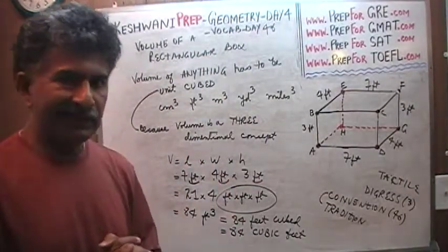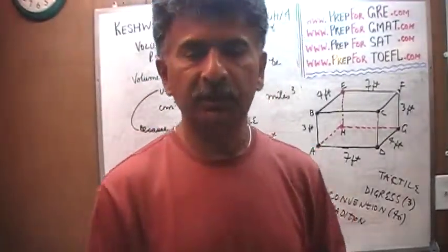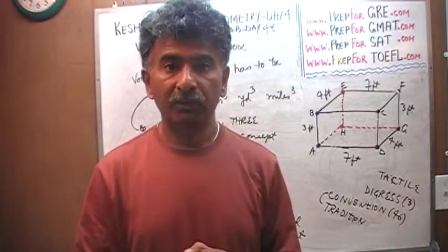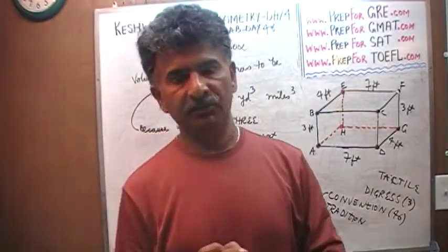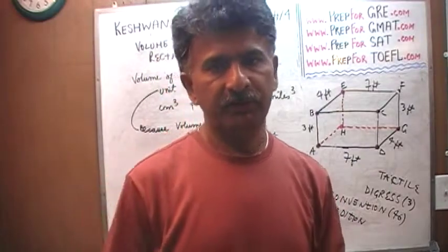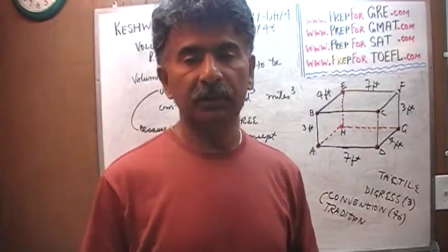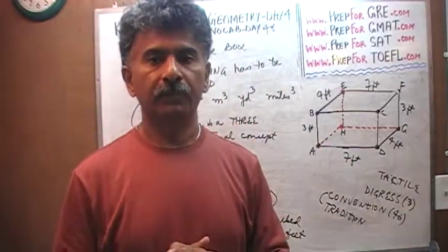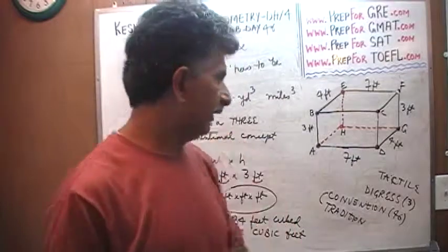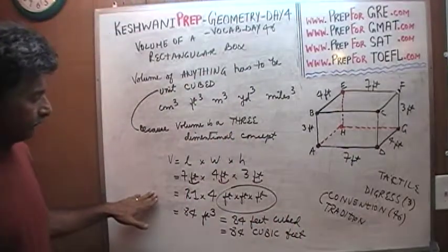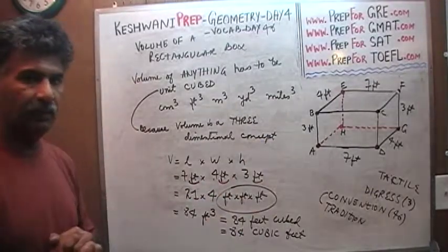So anything that is three-dimensional has to be something cubic — cubic feet, cubic yard, cubic inches, cubic meter, cubic mile, cubic something. If you are talking about the volume of the Grand Canyon, how much space is in the Grand Canyon, you can measure it in cubic miles. That will tell you what the volume of the hole in the ground is. Or you can talk about the volume of a lake in cubic yards. This rectangular box has a volume of 84 cubic feet.